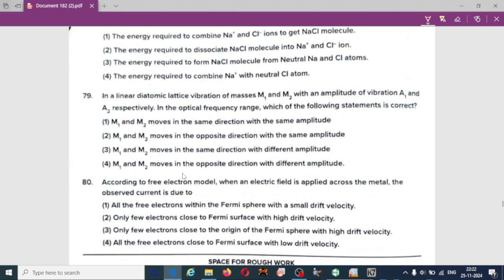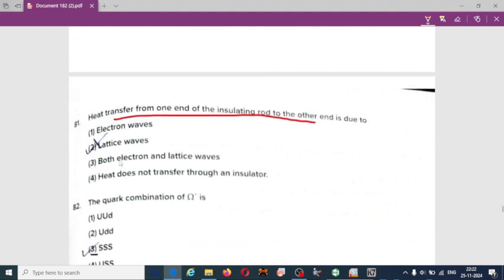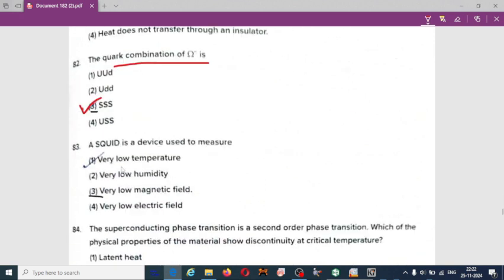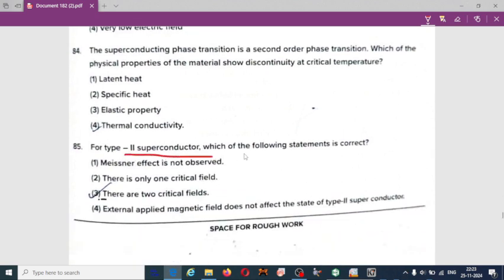Some of the questions - if your basics are clear, you can solve the questions. Heat transfer from one end to the insulating rod to the other end is due to lattice vibrations, I guess. The quark combination of sigma hyperon is strange quarks, triple S. SQUID is a device used to measure very weak magnetic field or low magnetic field. For type 2 superconductor, which of the following statement is correct? Meissner effect is not observed, there is only one critical field, there are two critical fields. So option 3 is correct - it has two critical fields.